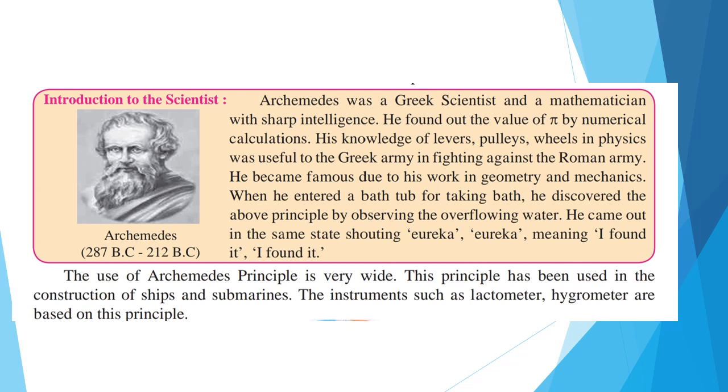Introduction to the Scientist. Archimedes was a Greek scientist and a mathematician with sharp intelligence. He found out the value of pi by numerical calculations. His knowledge of levers, pulleys, wheels in physics was useful to the Greek army in fight against the Roman army. He became famous due to his work in geometry and mechanics. When he entered a bath tub for taking bath, he discovered the above principle by observing the overflowing water. He came out in the same state shouting Eureka! Eureka! meaning I found it! I found it!